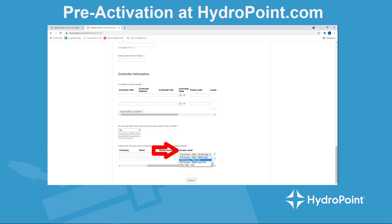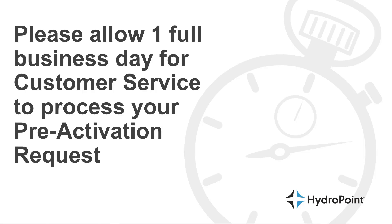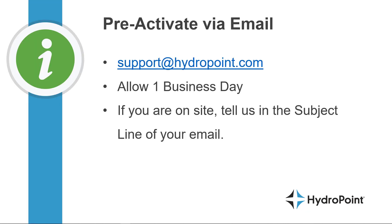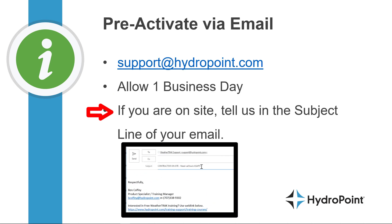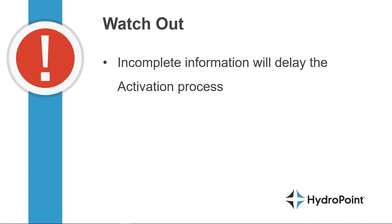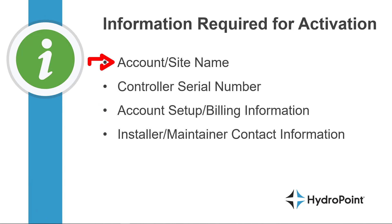Once this has all been filled out, submit the online form, and within one business day customer service will have your activation complete. Another great way to pre-activate is to email support@hydropoint.com with all of the necessary information; allow one business day for activation via email, though if you're on site and need expedited service, note that in the subject line and the email will be given special priority. Be aware that incomplete information in the activation request will delay the process, so make sure you include the account and site name, controller serial number, billing information, and anyone who needs access.